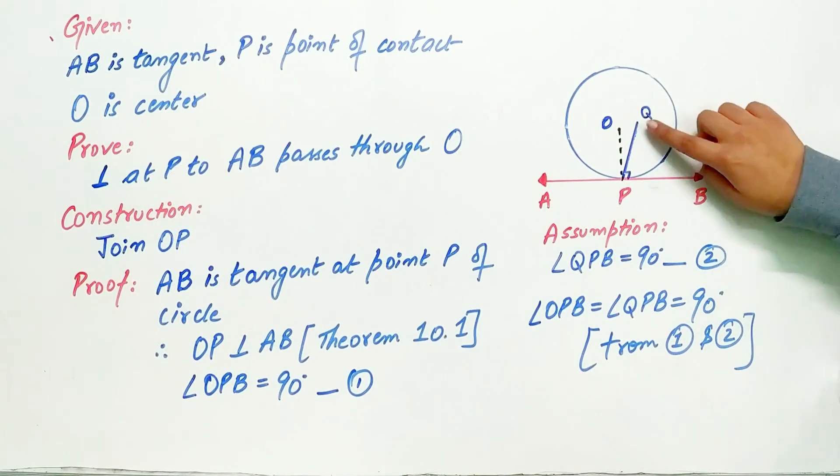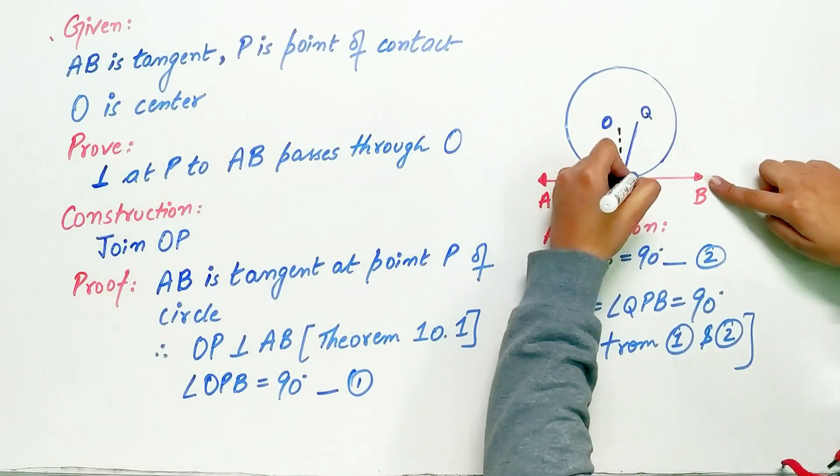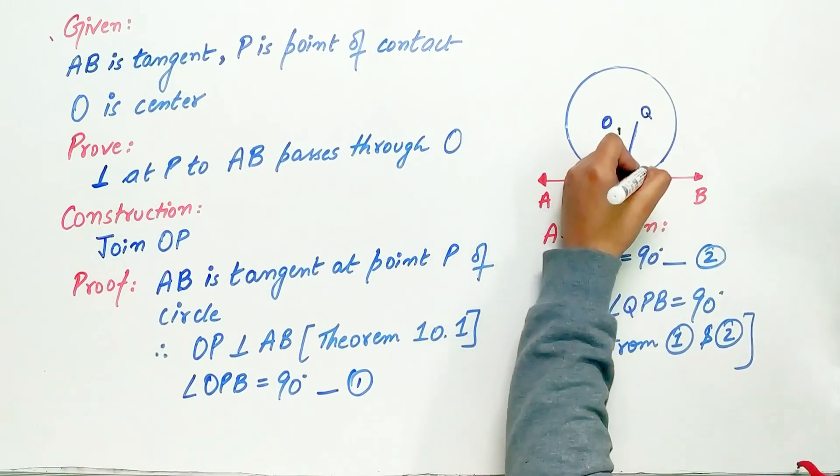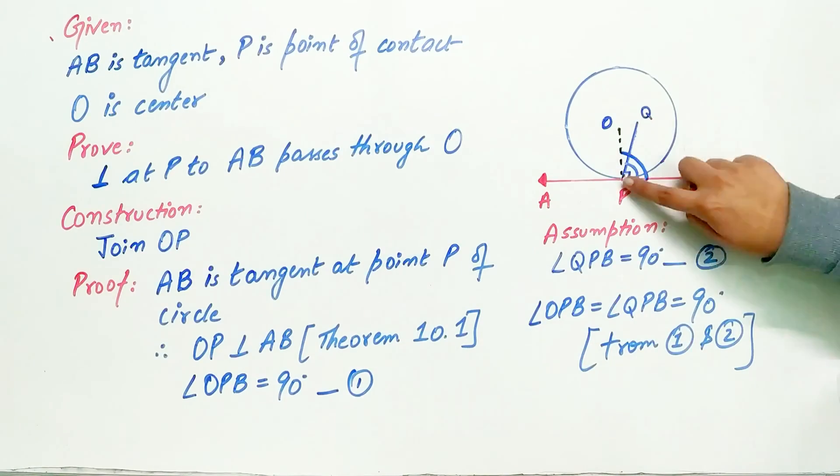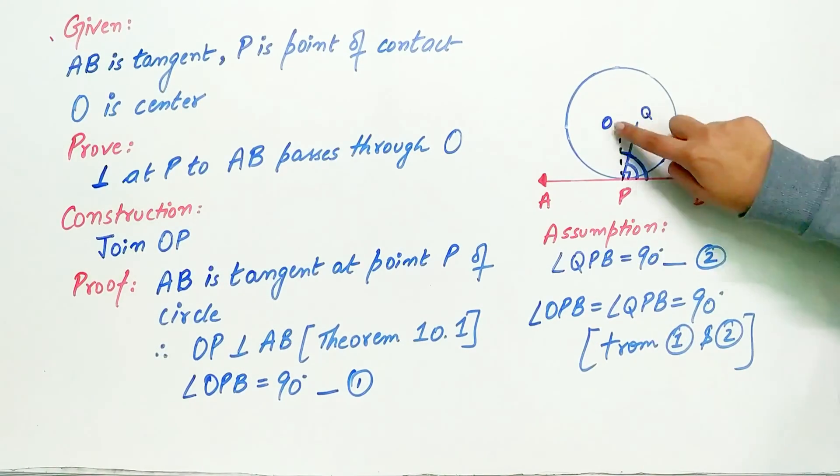Now look carefully. QPB is a part of angle OPB. Hence a part or angle QPB can never be equal to OPB.